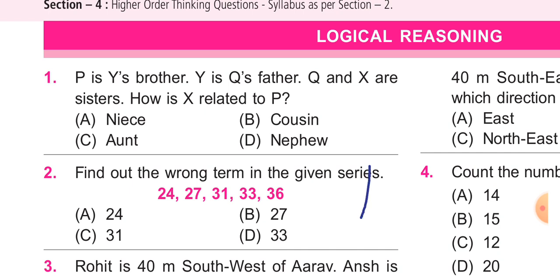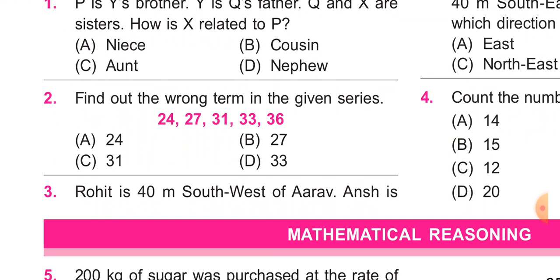Next question number 2: find out the wrong term in the given series. The series is 24 plus 3 is going to be 27, 30, 33 plus 3 is going to be 36. So 31 is wrong, the option is correct.